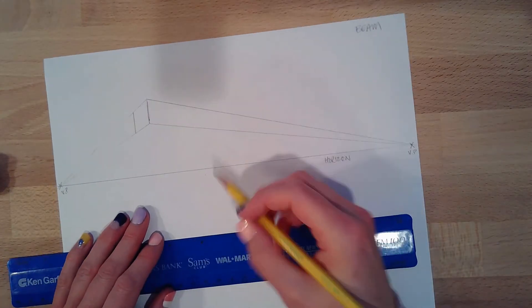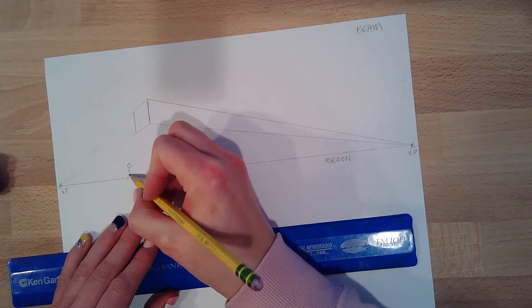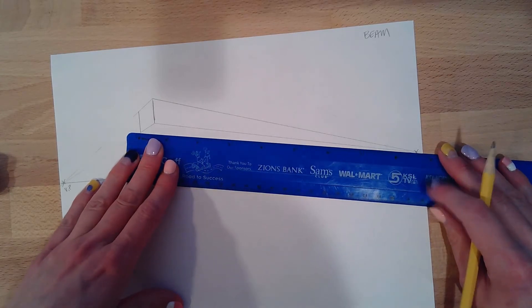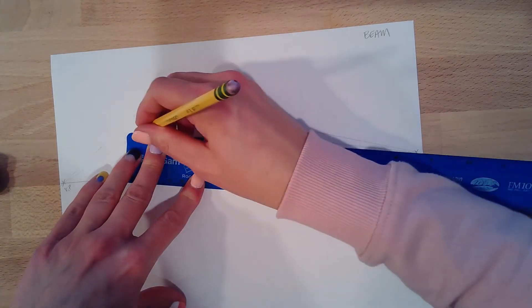Then because we're above the horizon, here's my little human, I'm just going to see the bottom of that beam. I'm going to draw the bottom side lightly, of course.